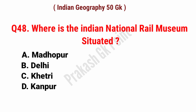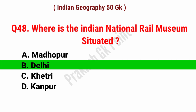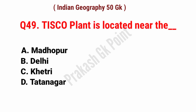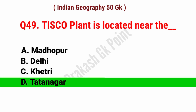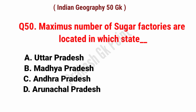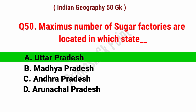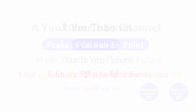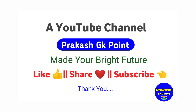Where is the Indian National Rail Museum situated? Answer: option B, Delhi. Tisco plant is located near blank. Answer: option D, Tata Nagar. Maximum number of sugar factories are located in which state? Answer: option A, Uttar Pradesh. Thanks for watching, like, share and subscribe for all types of English general knowledge.